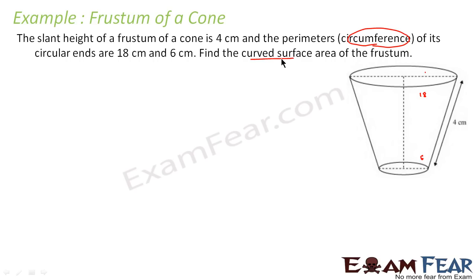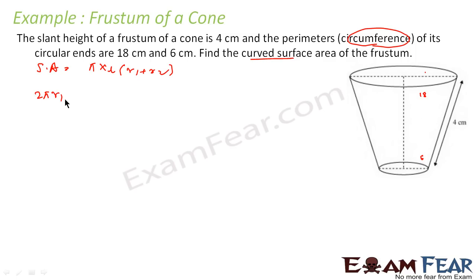We need to find the curved surface area. The formula is: curved surface area = π × L × (R1 + R2). We know L, but we don't know R1 and R2. However, we know the circumferences. From the circumference, 2πR1 = 18, so R1 = 18/(2π) = 9/π.